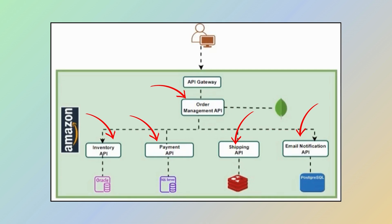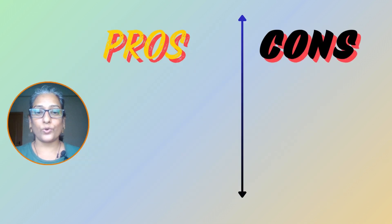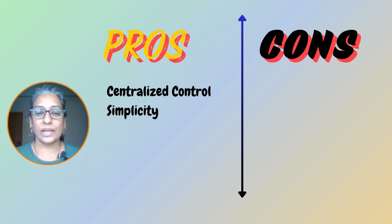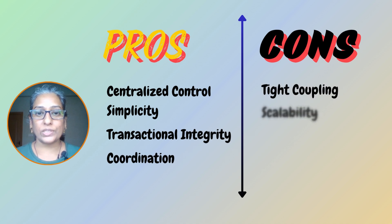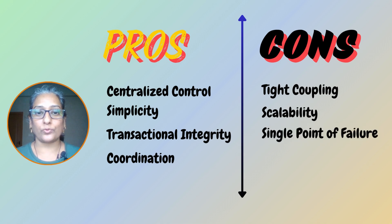The orchestrator makes sure all these steps happen in the right order and handles any issues that come up. Orchestration offers centralized control, simplicity, and transactional integrity. However, it can lead to tight coupling and potential scalability issues, and the central orchestrator might become a single point of failure.